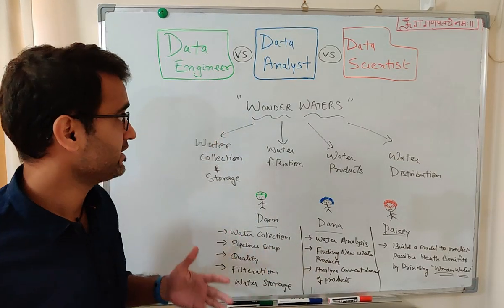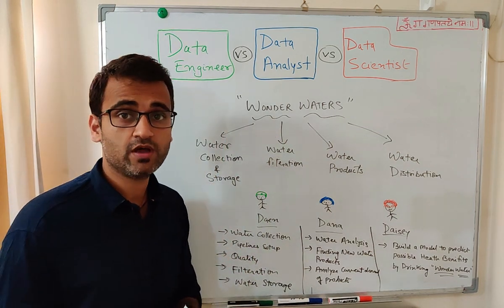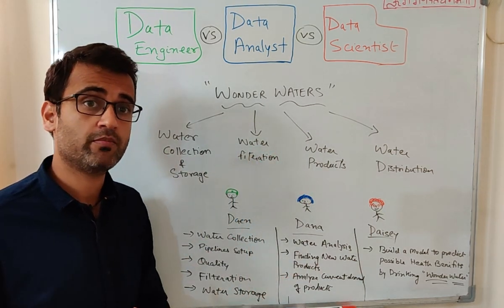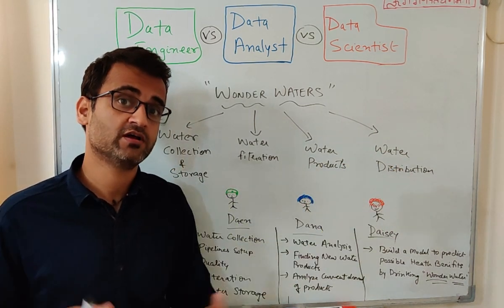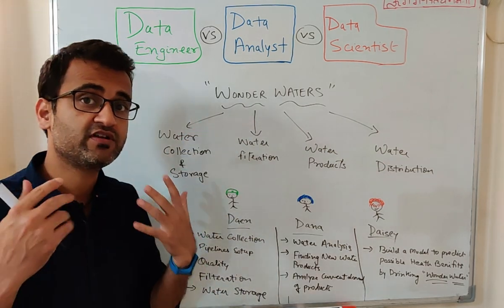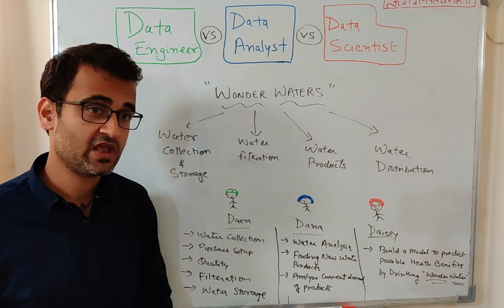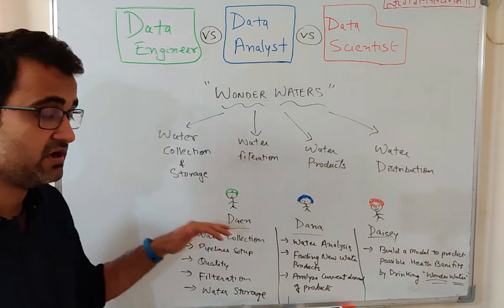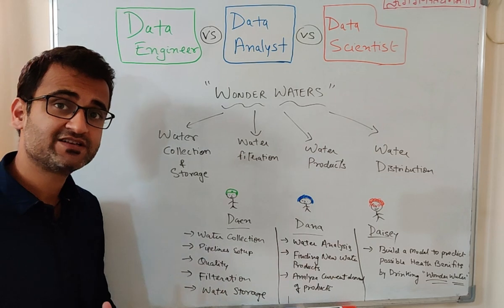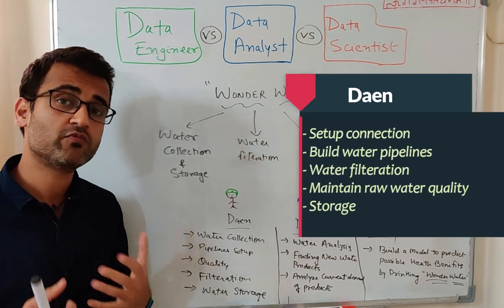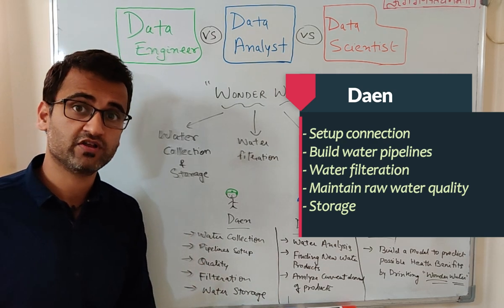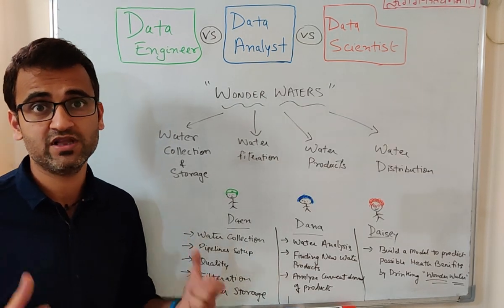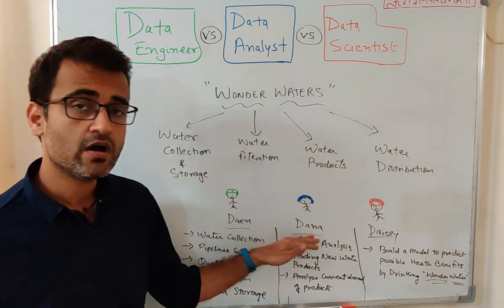Let's start with a real-life example. Consider a company called Wonder Waters, which specializes in water collection and storage, filtration, building new water products, and managing water distribution to other industries. In Wonder Waters, there are three employees — Dane, Dana, and Daisy — each working in different departments with different responsibilities.